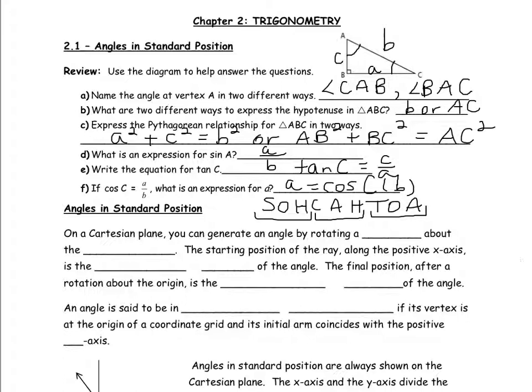We could name the angle at vertex A in two different ways. We could call it angle CAB, or we could call it angle BAC using the vertices of the right triangle. Two different ways to express the hypotenuse in triangle ABC: the hypotenuse is always opposite the 90 degree angle, so we could call the hypotenuse little b, or we could call it AC using the vertices. The Pythagorean relationship can be expressed as a squared plus c squared equals b squared, or as AB squared plus BC squared equals AC squared.